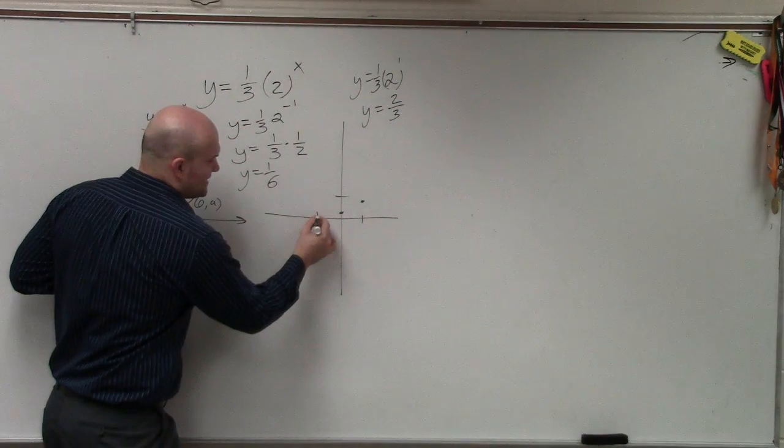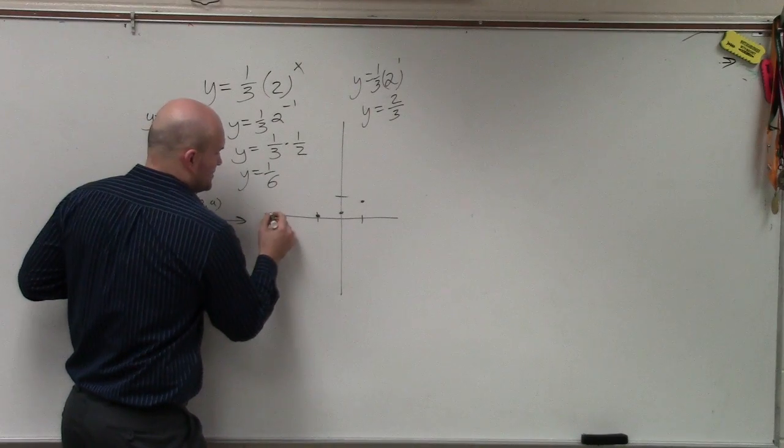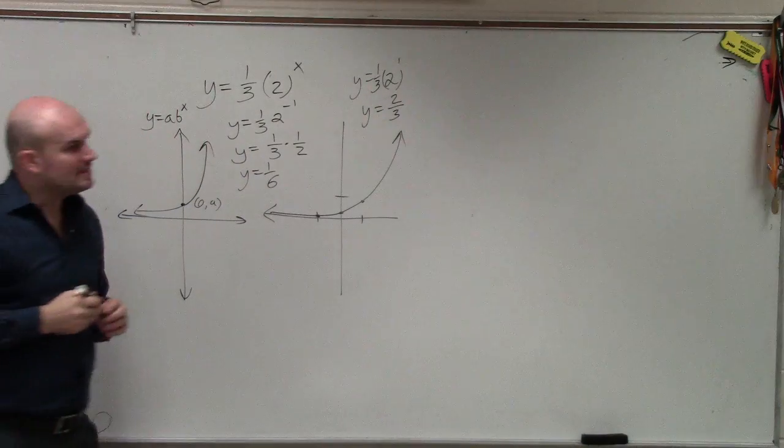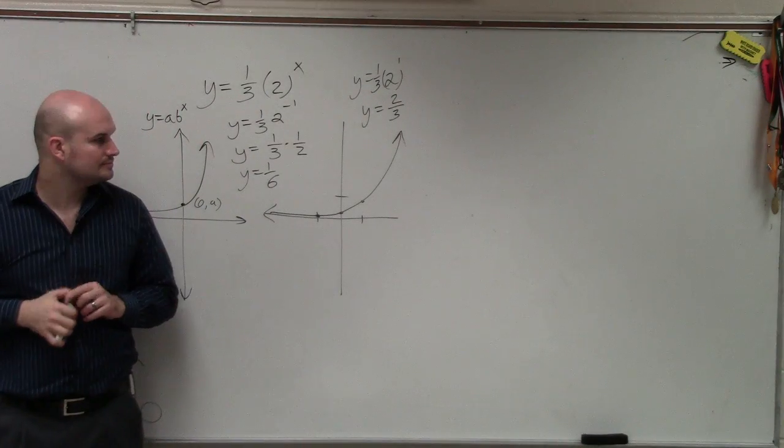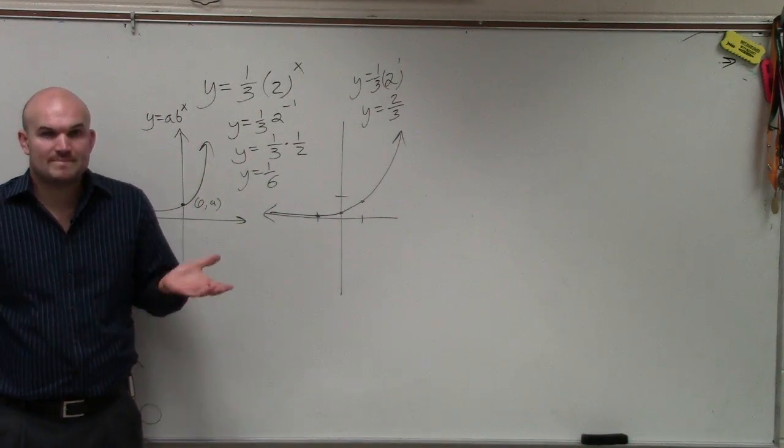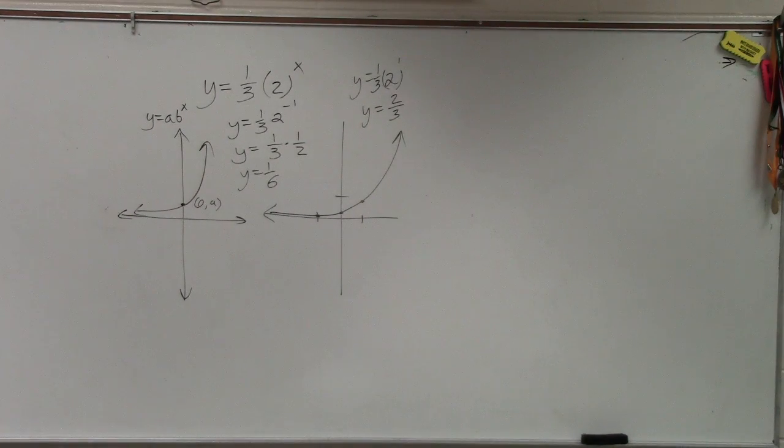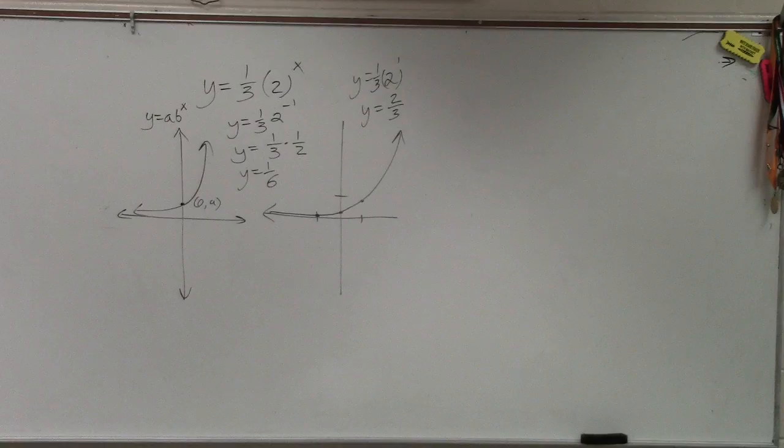And if you guys go ahead and compute that decimal, you guys can see it's going to be already very close to 0. So that's what your graph would look like. Okay? That's it. So all I asked you guys to do was to not only find the y-intercept, but to plot a point to the left and to the right of your graph.